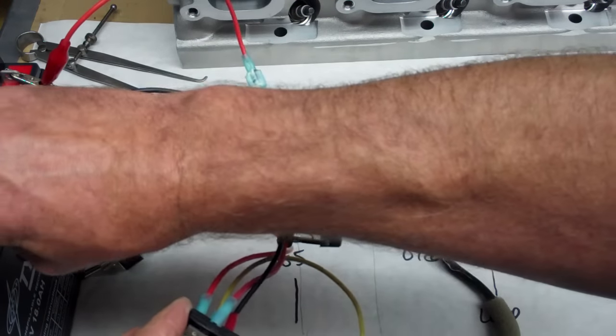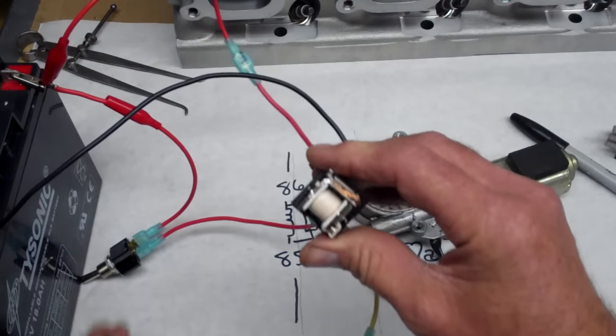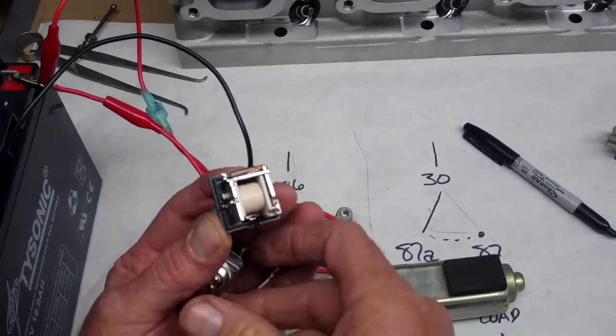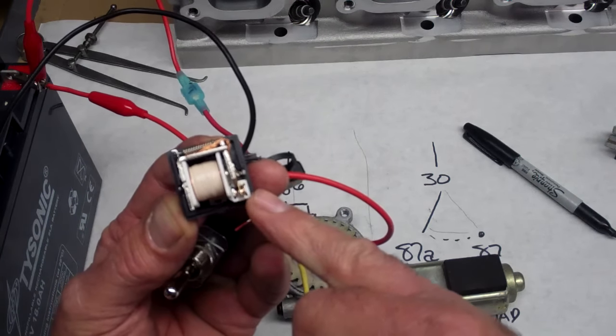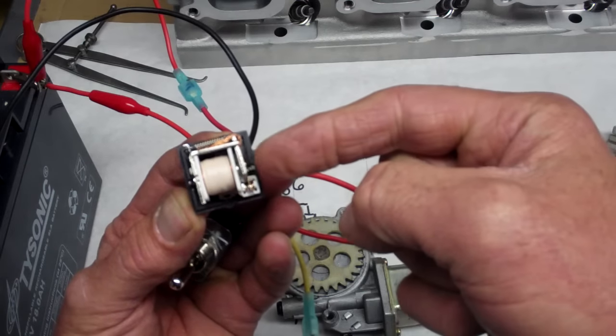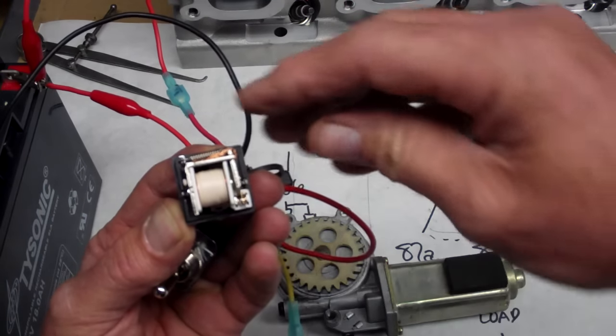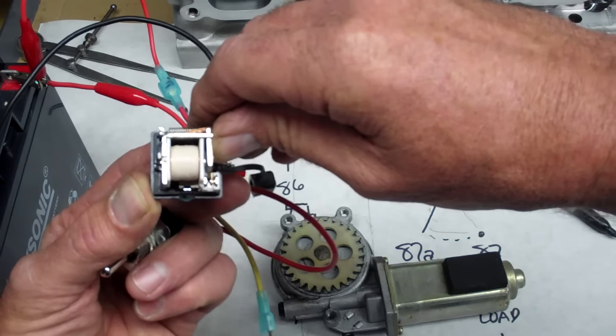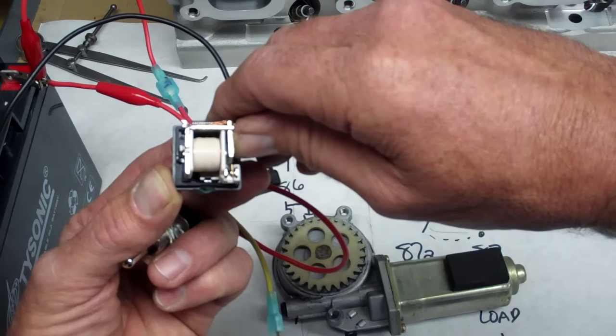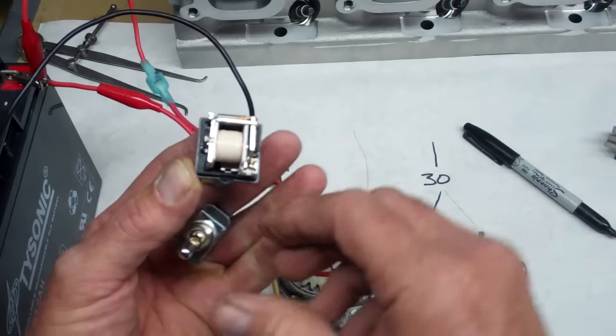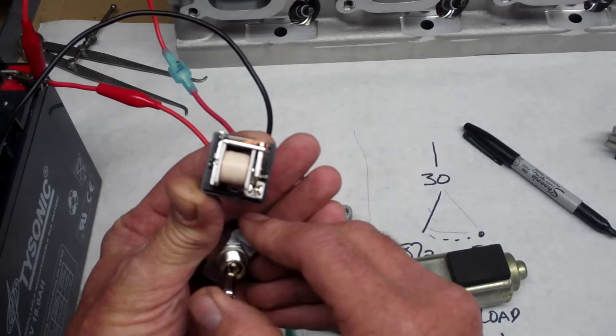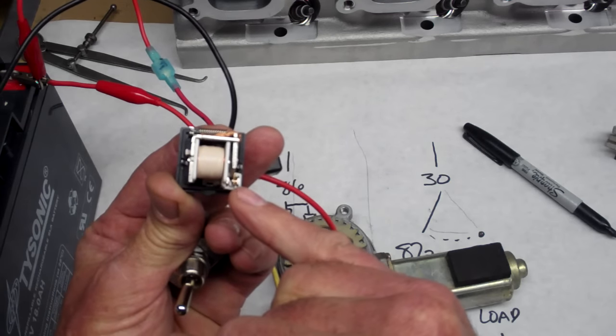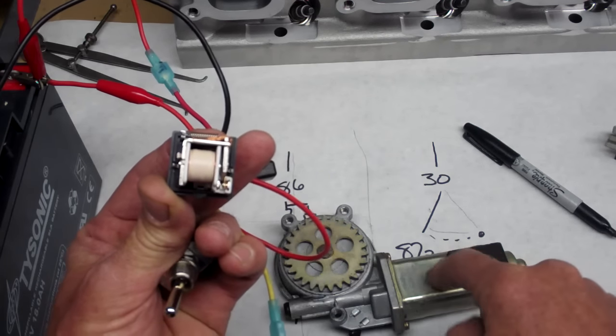So if everything is working properly, when I turn the switch on, we should see this switch right here engage. And when it does, the motor should run. Right now, I'm just doing that by hand. Watch the motor. See, I can just do that by hand, but that's not very convenient for us when we're driving down the road. So we use a switch. There we go. Alright. Switch on.